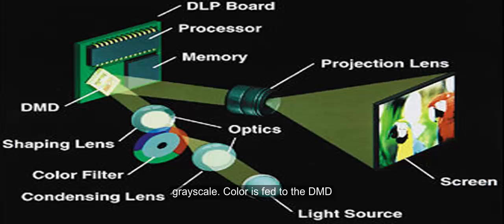Color is fed to the DMD by a beam of light that passes through a spinning color wheel before it reaches the chip. Each segment of the color wheel delivers one color.